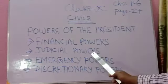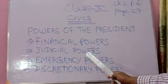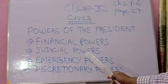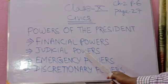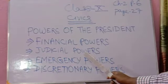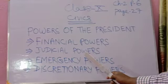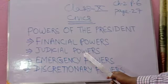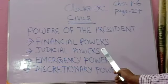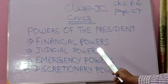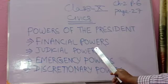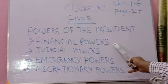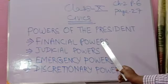Another financial power concerns the Contingency Fund of India. The Contingency Fund of India is placed at the disposal of the president. He can make advance payments from it to meet unforeseen expenditure and recover the same with the approval of the parliament. He can operate the Contingency Fund of India with the approval of the parliament. So this was all about the financial power of the president.